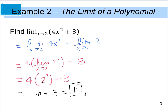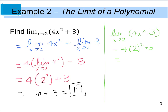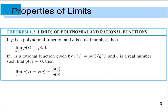For those who like shortcuts, we could have used direct substitution from the very beginning: with the limit as X approaches 2 of 4X squared plus 3, direct substitution gives 4 times 2 squared plus 3, which is 16 plus 3, equaling 19. Theorem 1.3 tells us that if you have a polynomial function and C is a real number, then the limit as X approaches C of that polynomial equals the polynomial evaluated at C.